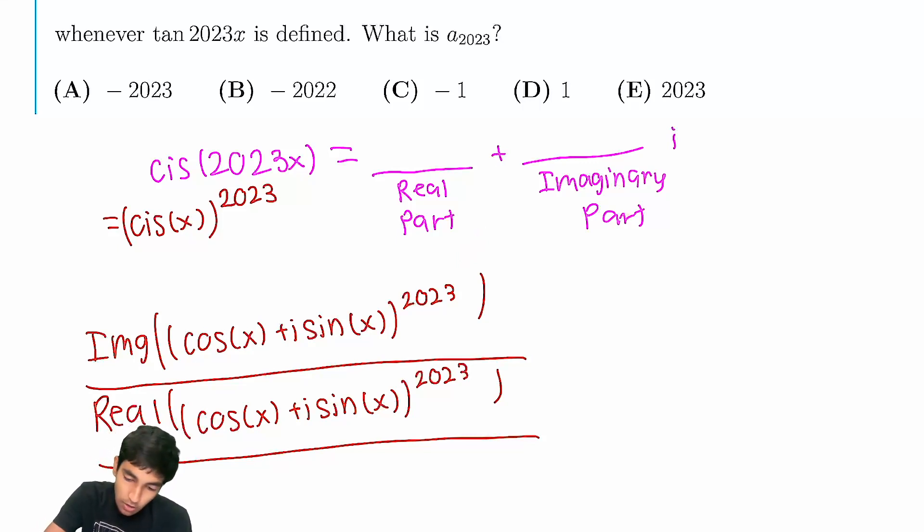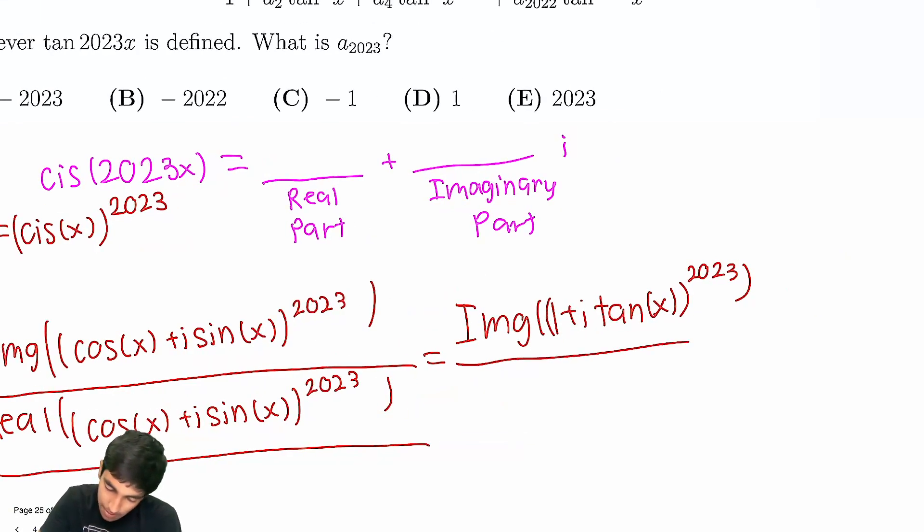So, just divide by cosine of x, we get, this is imaginary part of 1 plus i tan x to the 2023, and the denominator is just going to be the real part of that same thing. Same as the top.